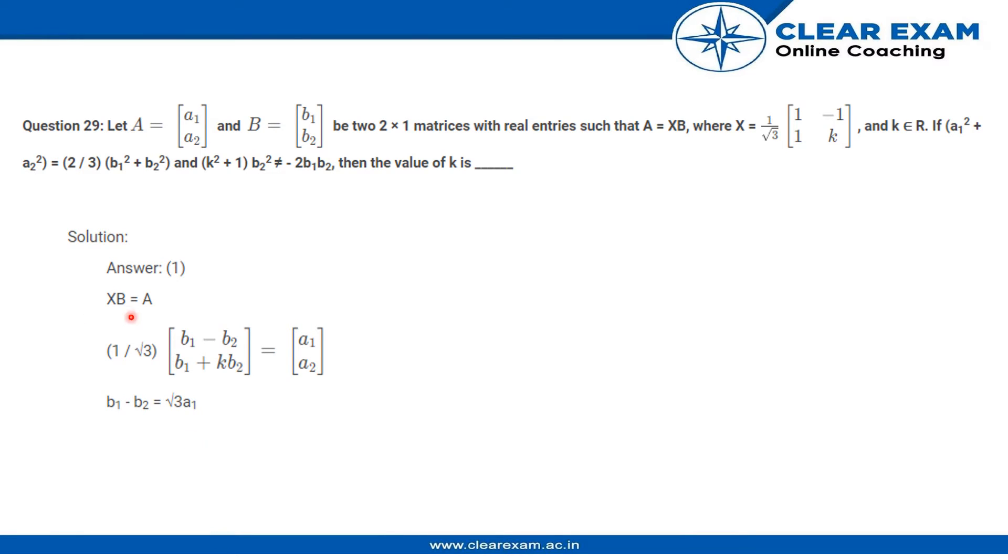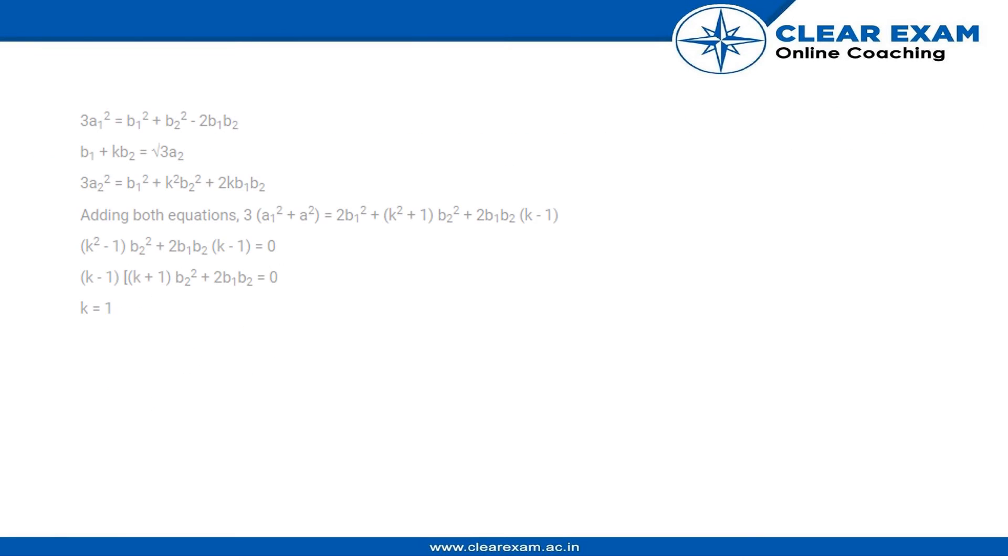Once this relation holds, we can say that b1 minus b2 equals √3a1, and b1 plus kb2 equals √3a2. Using both these equations, we get two equations by squaring them.